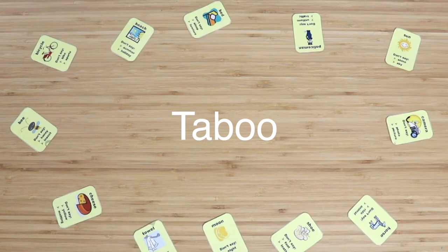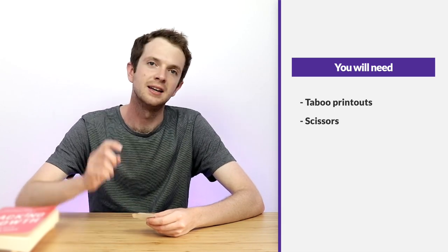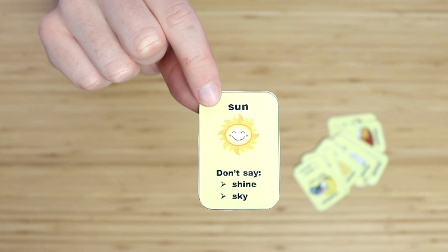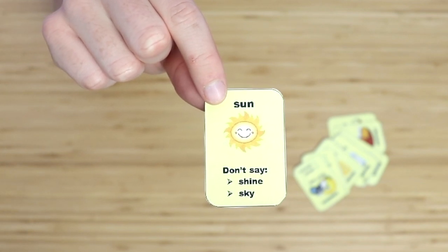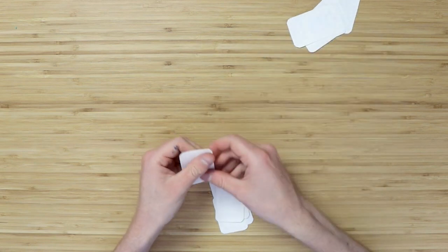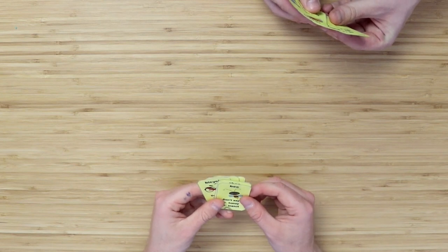The next activity is a game called Taboo, and what you'll need for this is Taboo cards — you can make your own or download the ones from the link in the description below. A Taboo card consists of a word and a picture. For example, this card says sun and has a small image of a sun, but the player isn't allowed to say shine or sky — they need to try and explain to the other children what the card represents. The children take it in turns to describe what's on their card without using the words listed underneath. This is a great way to encourage discussion and build vocabulary and adjectives.